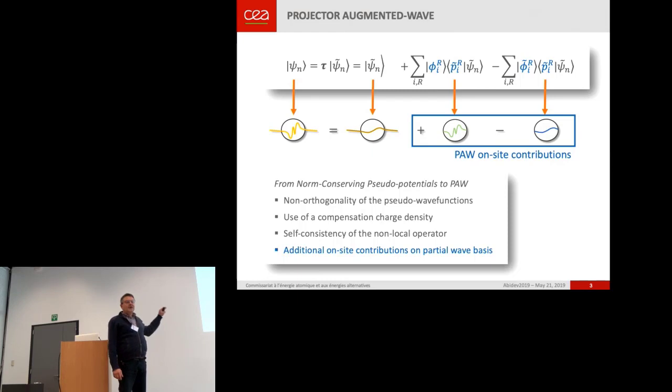And when you want to go from a norm-conserving pseudo-potential code to a PAW one, you have four additions, four kind of additional lines in your code.